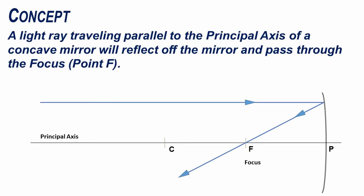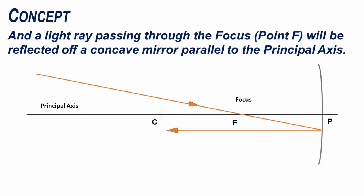A light ray traveling parallel to the principal axis of a concave mirror will reflect off the mirror and pass through the focus point F. And a light ray passing through the focus point F will be reflected off a concave mirror parallel to the principal axis.